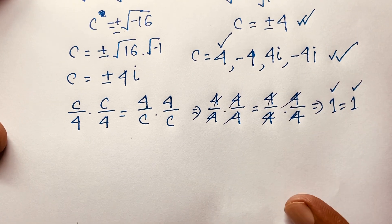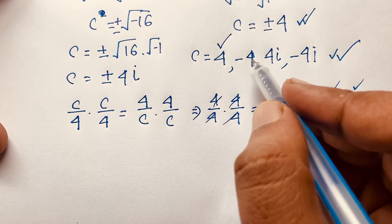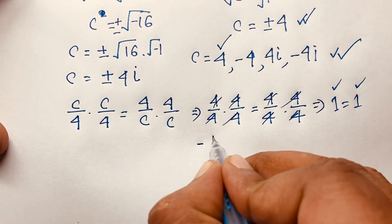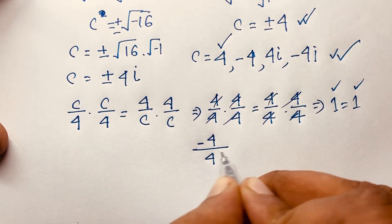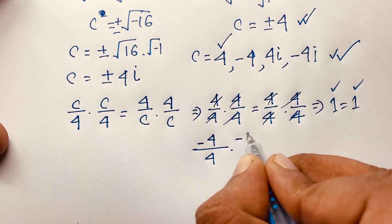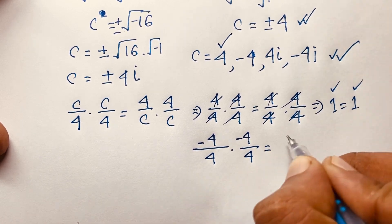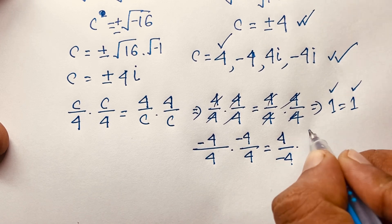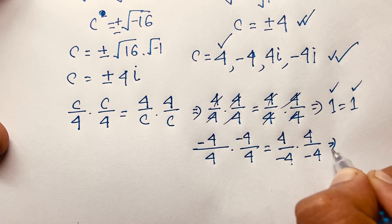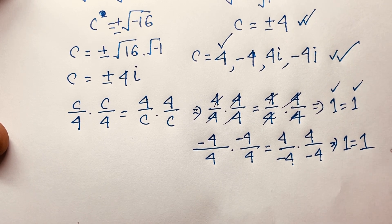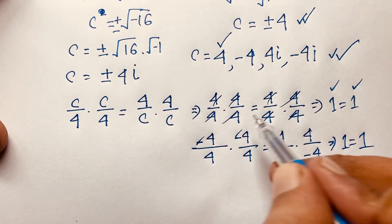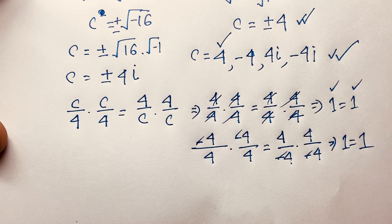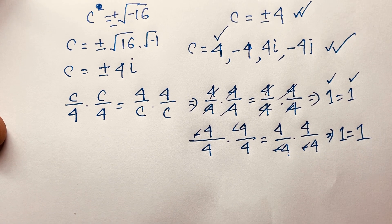Now if we take c equals negative 4, then c over 4 becomes negative 4 over 4. We get negative 4 over 4 times negative 4 over 4 equals 4 over negative 4 times 4 over negative 4. The negatives cancel — minus times minus is plus — so we again find 1 equals 1. So c equals negative 4 is also a valid answer.